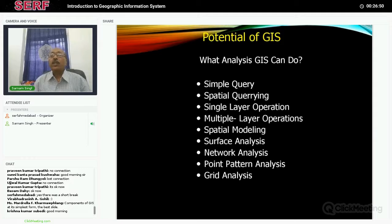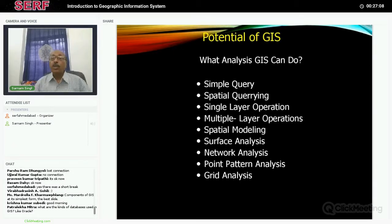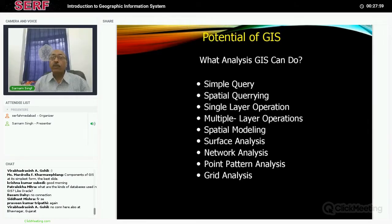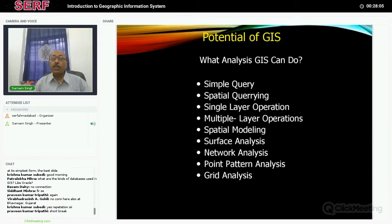The best part of GIS is its strength to allow you to do analysis. If you create huge terabyte amounts of data but cannot analyze it, it is not of much use. Plan your database based on requirements. Types of analysis available include: simple query, spatial query, single layer operation, multiple layer operation, modeling, surface analysis, network analysis, pattern analysis, and grid analysis — there is immense potential for different kinds of analysis once the database has been created.